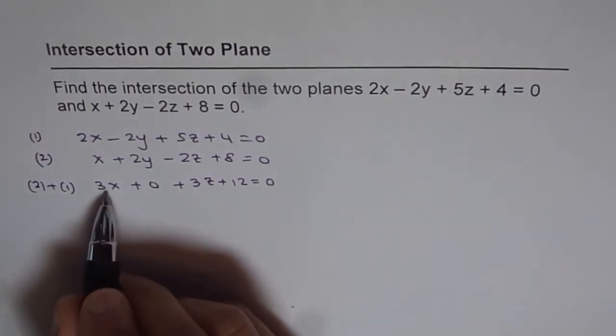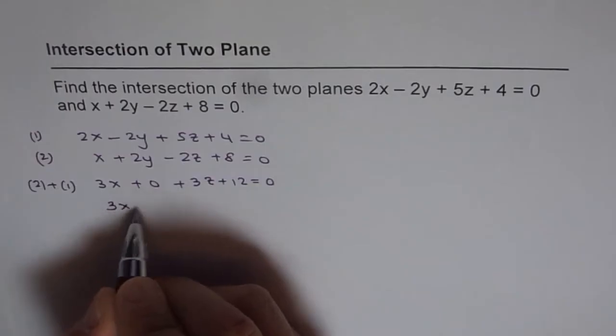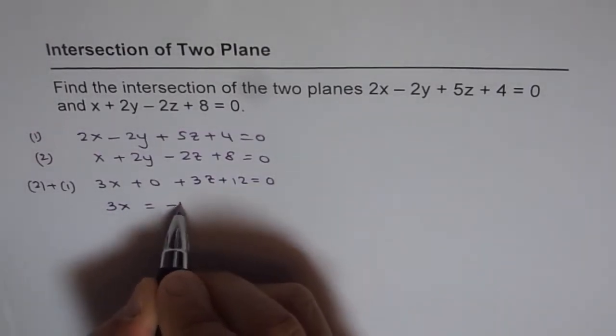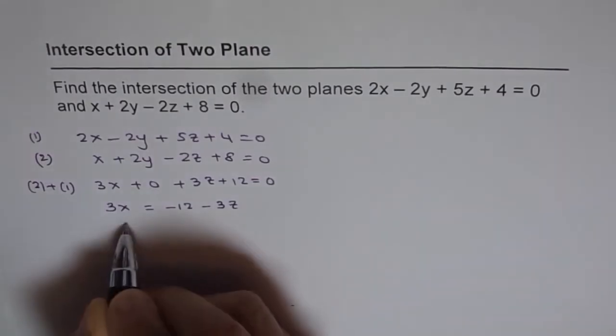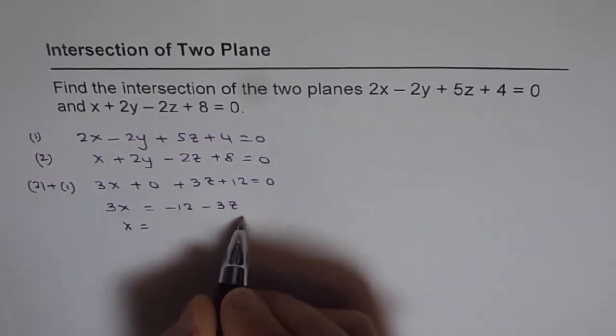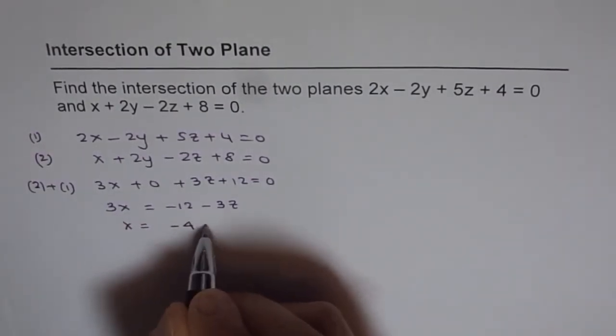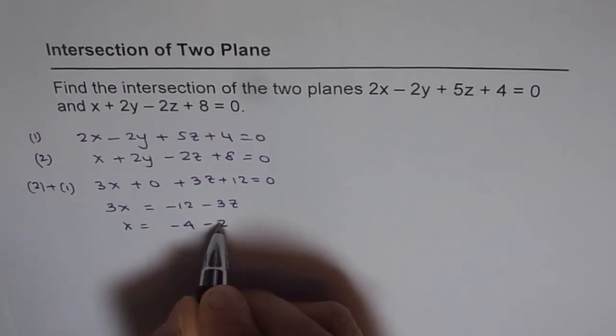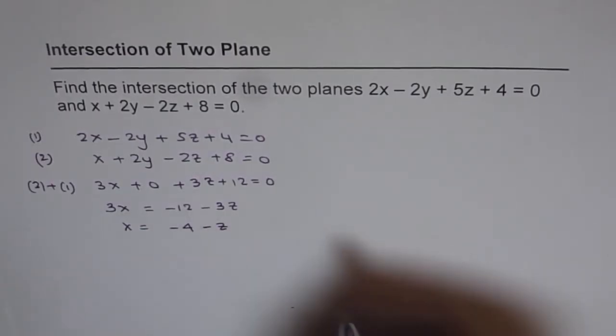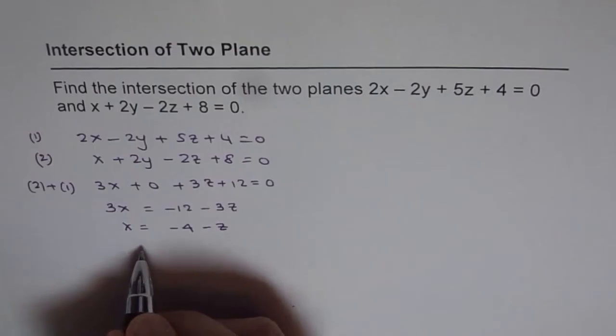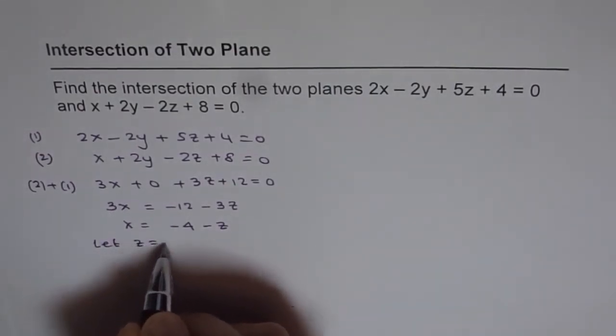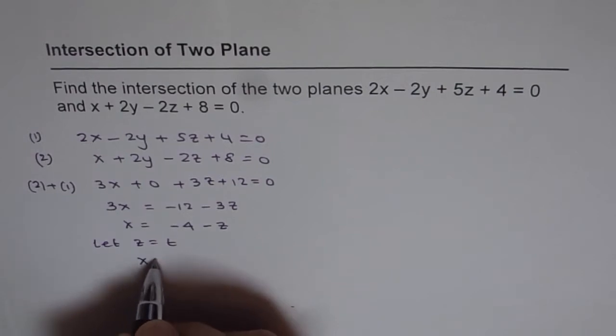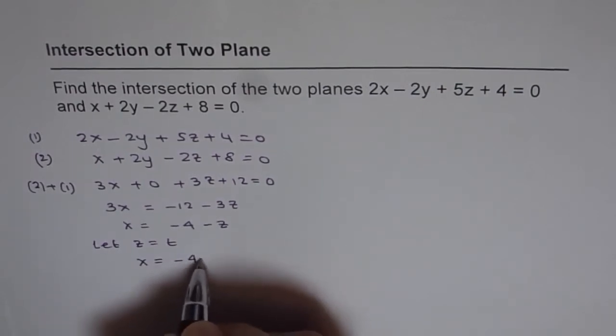First, we find what 3x equals. 3x = -12 - 3z, or dividing by 3, x = -4 - z. If we assume z equals the parameter t, then x = -4 - t.